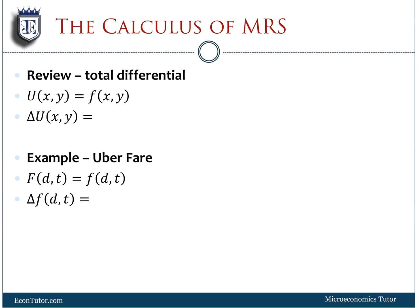Now let's recall some calculus. A lot of students have done this in Math for Econ 102 but tend to forget, so this is a quick refresher on marginal analysis and derivatives. The total differential of any multivariate function — where utility depends on two variables X and Y — is given by the partial derivative with respect to X times ΔX, plus the partial derivative with respect to Y times ΔY.